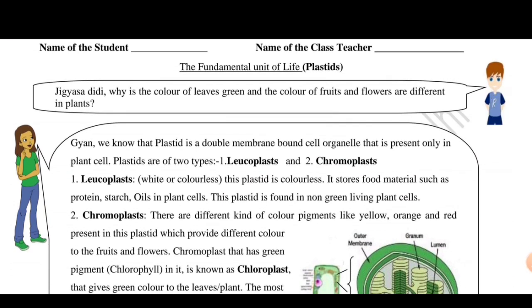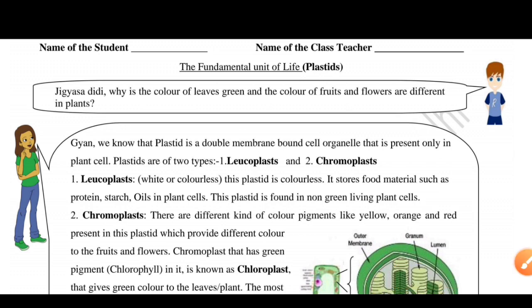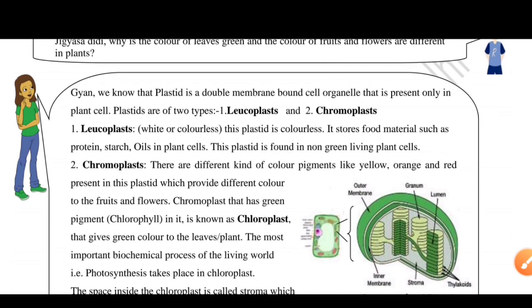What is the color of the leaves? The leaves are green, and the colors of the fruits and flowers are different in plants. Why are the leaves green? Why are the plants different colors? It is a very interesting topic, and this is because of plastids.